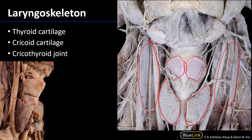The thyroid cartilage is suspended from the hyoid bone, which is located about here, by the thyrohyoid membrane — which I'm drawing in here, currently obscured by the hyoid bone. The hyoid bone is approximately at the C3-C4 vertebral level. The thyroid cartilage is approximately at the C4 vertebral level.